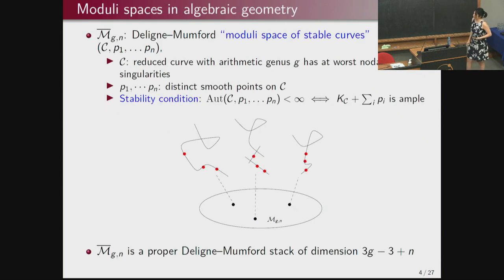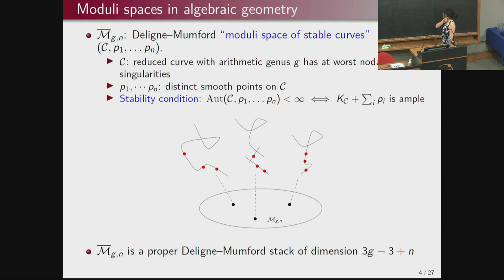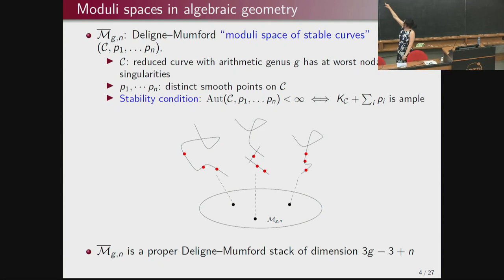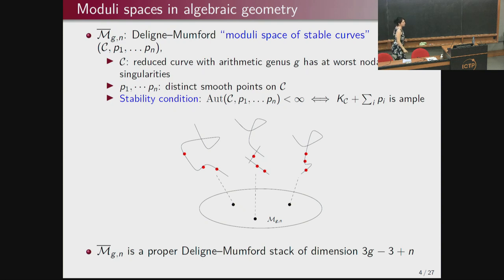To start with moduli spaces: one of the most extensively studied moduli spaces in algebraic geometry is the Deligne-Mumford moduli space of stable curves, M-bar-G-N. Every point corresponds to a stable curve, which is a reduced curve of arithmetic genus G with at most nodal singularities, together with points P1 to PN, imposing a stability condition requiring the automorphism group to be finite. Mathematically this is equivalent to saying that the canonical divisor together with these points should be ample. Deligne-Mumford showed it is a DM stack of dimension 3G minus 3 plus N.